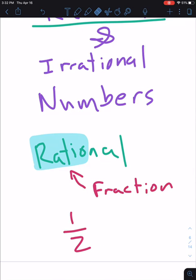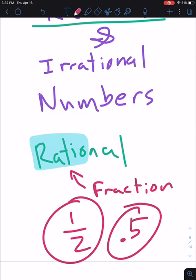So we've got one half, so any number that can be written as a fraction, like one half, or 0.5, is rational. Any number that can be written as a fraction, so let's write that down.